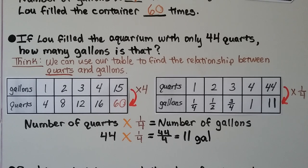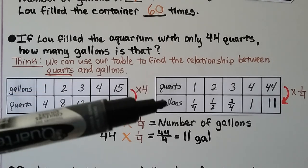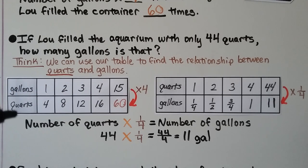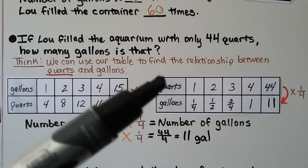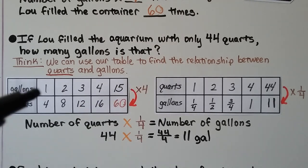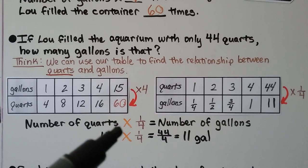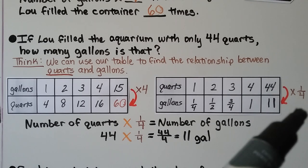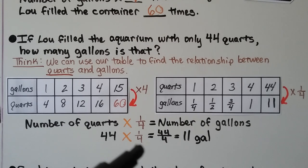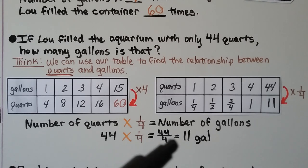If Lou filled the aquarium with only 44 quarts, how many gallons is that? We use our table: if one gallon is four quarts, then one quart is one-fourth of a gallon. We do 44 times one-fourth, which equals forty-four fourths. Forty-four divided by four is eleven, so that means eleven gallons.